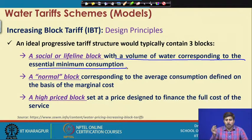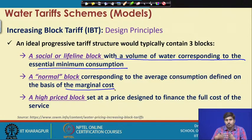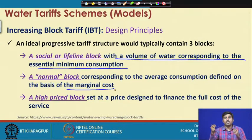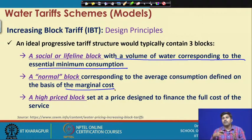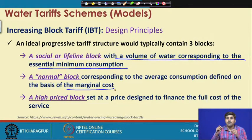Post the lifeline block, it goes to a normal block which corresponds to the average consumption, defined on the basis of marginal cost. In order to achieve a sustainable pricing structure, one should ensure financial recovery of the investment being made, and that is done when the price is set near marginal cost. Generally, the second or normal block — which allows up to average consumption — is priced near marginal cost, while the subsequent third or fourth blocks are high-priced blocks.